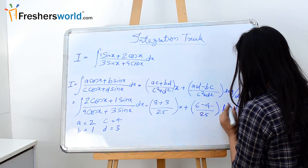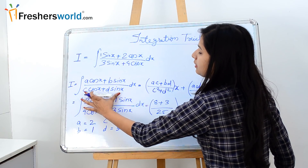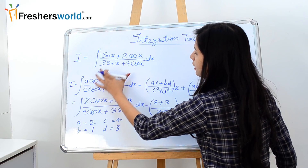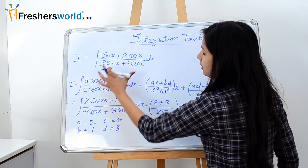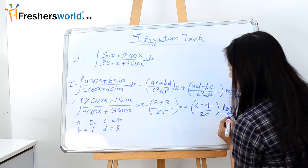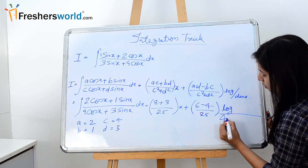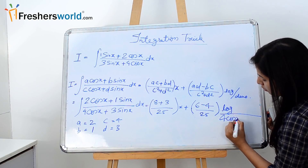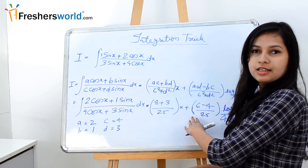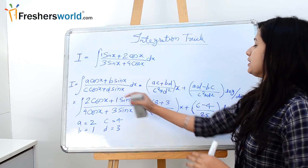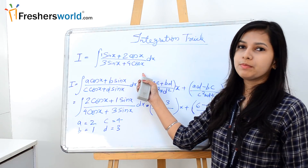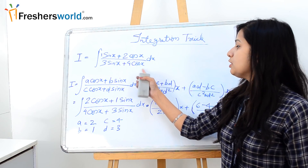Now we rearrange the denominator in this format. So the denominator is 4cos x + 3sin x. Putting it all together, our answer using this formula is (11/25)x + (2/25)·log(4cos x + 3sin x).